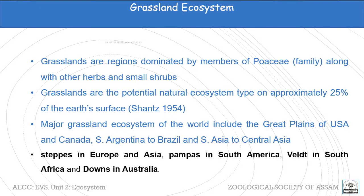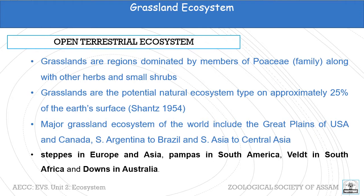A grassland ecosystem is basically an open terrestrial ecosystem. Grasslands are regions dominated by members of family Poaceae, that is grasses, along with other herbs and small shrubs. They constitute approximately 25% of the earth's surface among the older natural ecosystems.